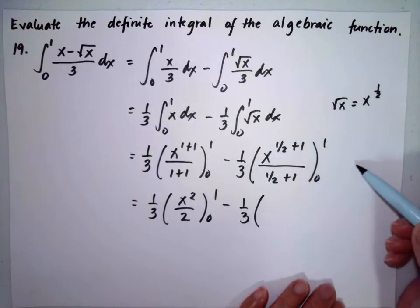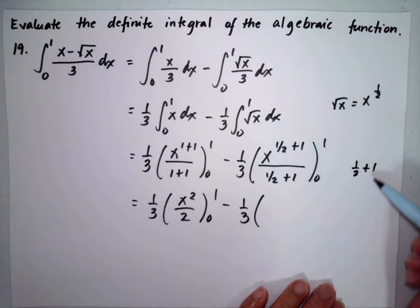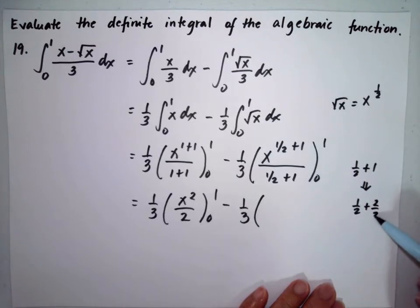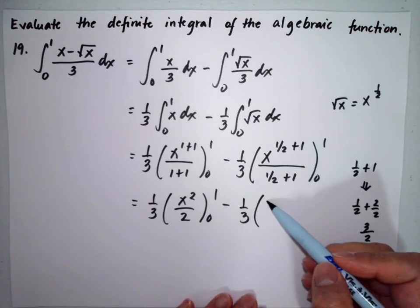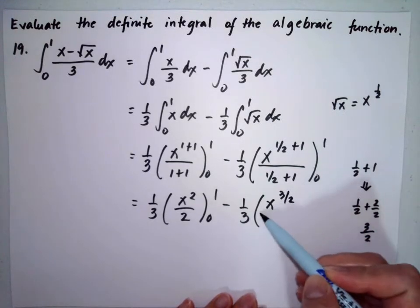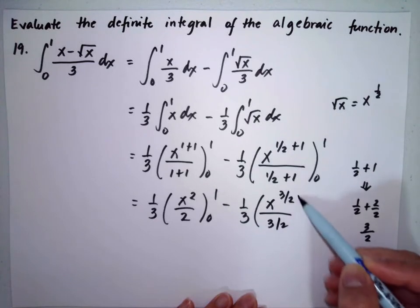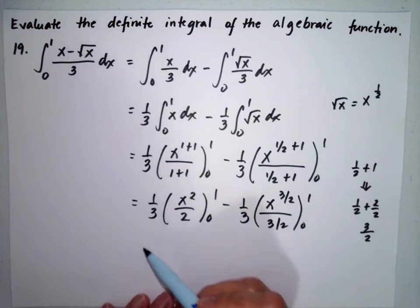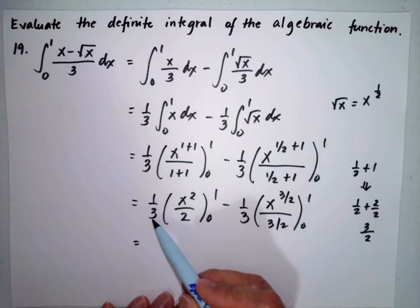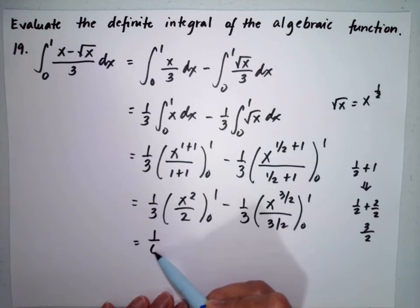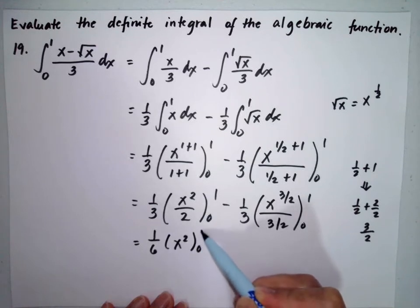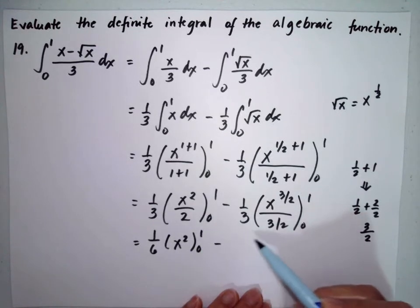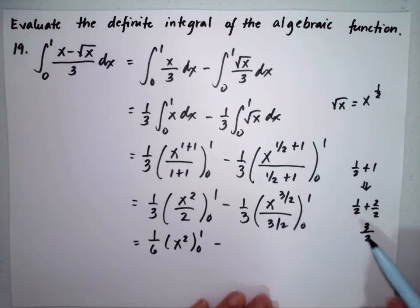The 1/2 plus 1 can be written as 1/2 plus 2/2, which equals 3/2. So we have x to the 3/2 over 3/2, from 0 to 1. The 2 can be multiplied by the 3, giving us 1/6 times x squared from 0 to 1, minus 1/3.